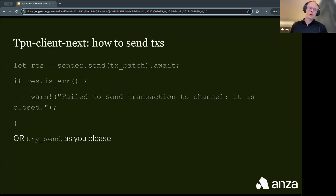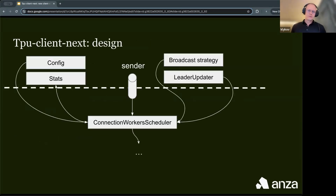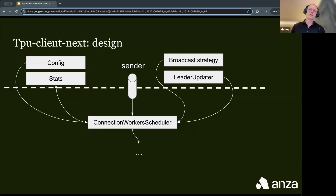That's why we created a new client-side implementation called TPU Client Next. From the user perspective, you have a sender — the sender part of a Tokio channel — and can call sender.send or sender.trySend depending on your needs. TPU Client Next is primarily the connection worker scheduler structure, which takes a receiver part of the channel and configuration. It can be customized with a custom broadcast strategy and leader updater implementation, and it returns stats so a user can use their own metrics database of choice, not only InfluxDB.